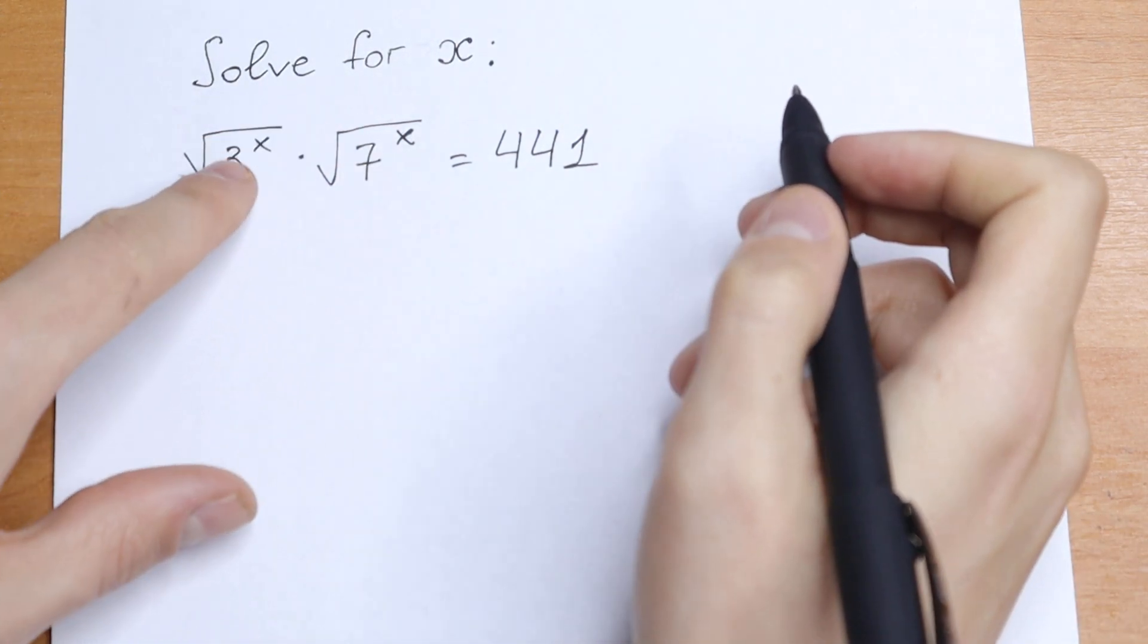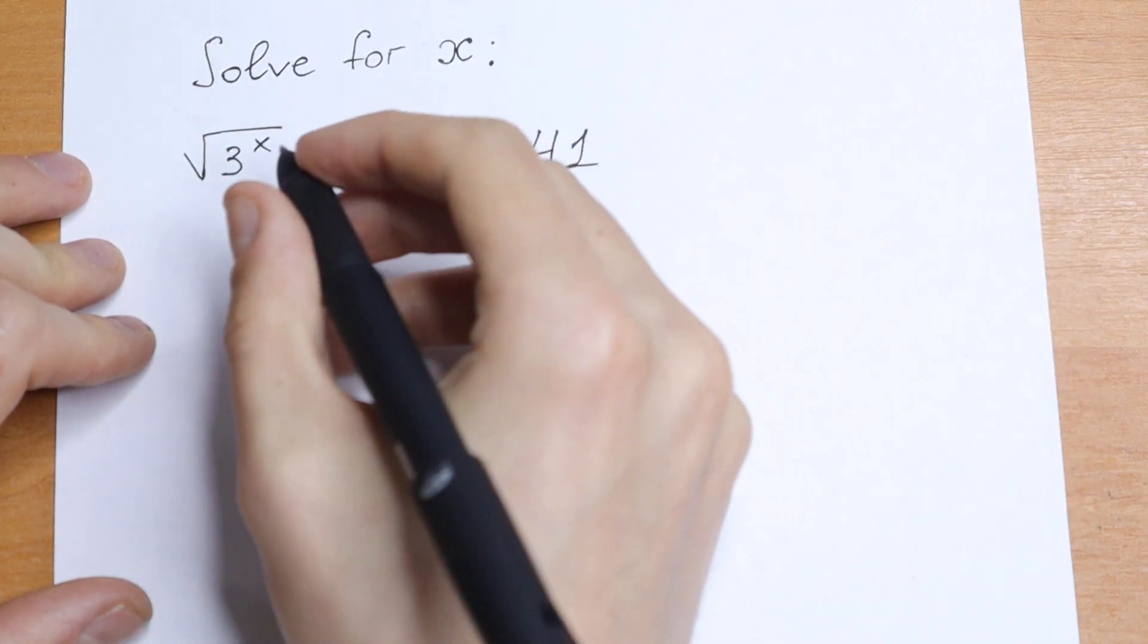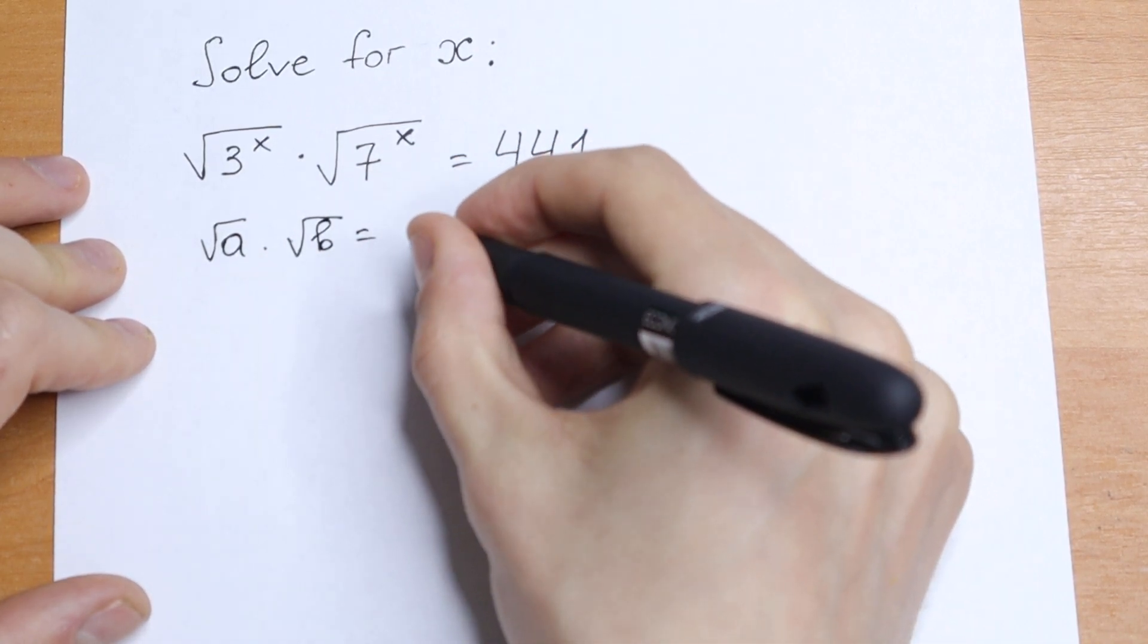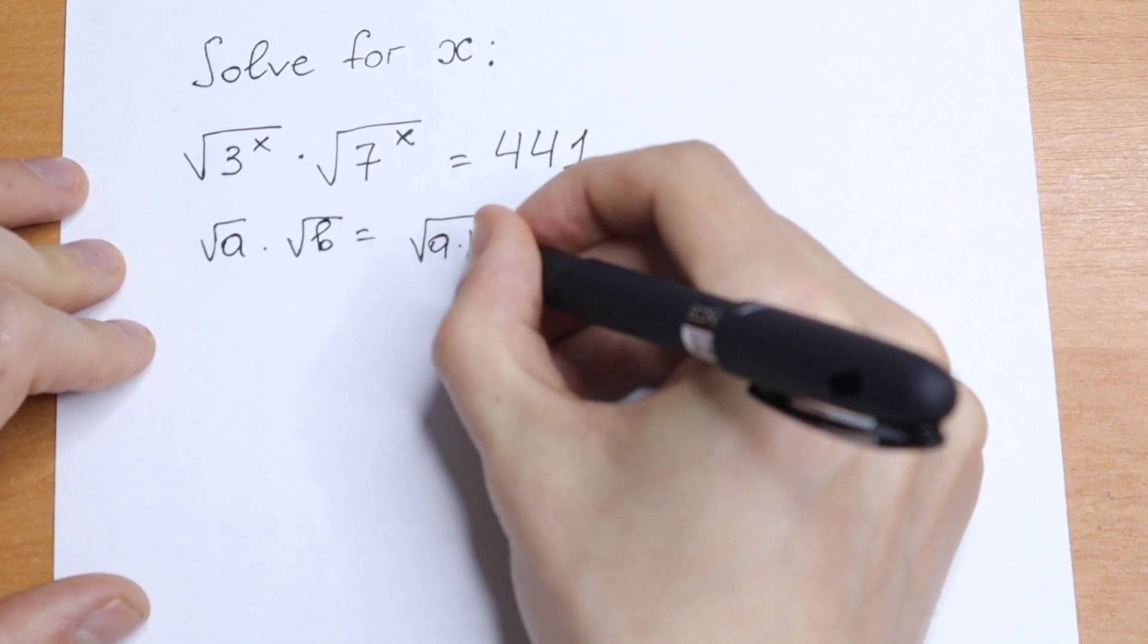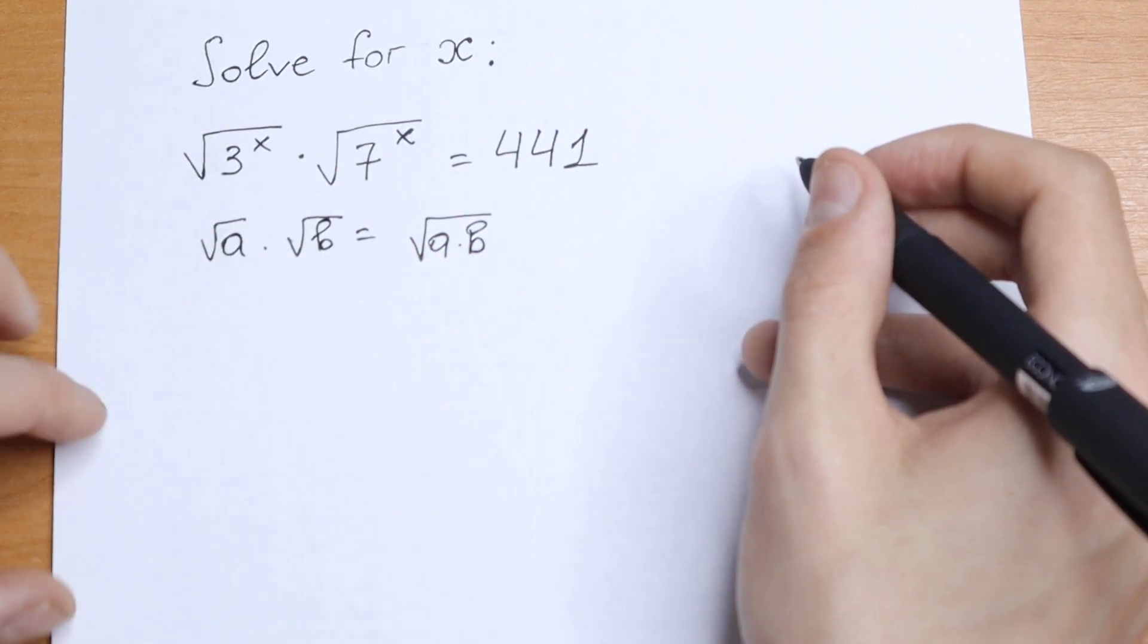On the first side, this equation is really hard because we have an exponent right here, but take a look. We know the rule: if we have square root of a times square root of b, we can write it as square root of a times b. So we can multiply this under one square root sign. So we can use this rule right here.